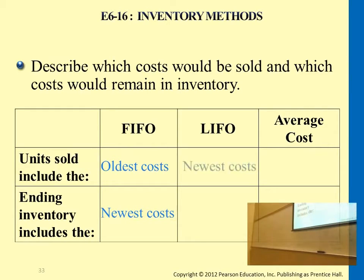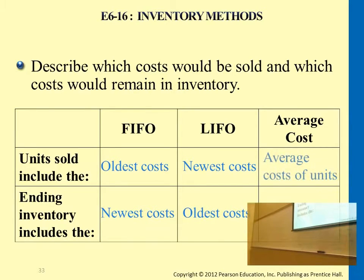LIFO will be exactly the opposite. Units sold, we start from recent costs. So ending inventory included on the balance sheet will be the older costs. Average cost is always constantly averaging out a unit cost, so the numbers are not from the oldest or newest — it's actually somewhere in the middle.